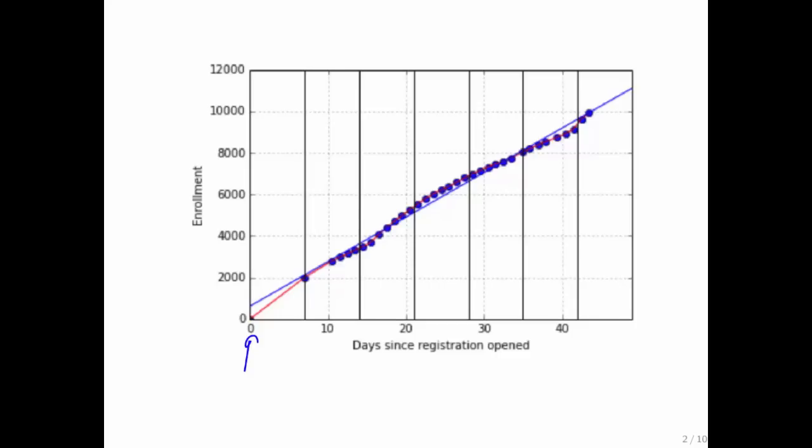So what I did was I started collecting data on how many people had registered as a function of the number of days since registration opened. And here is data for the first 45 days or so of this exercise. And what do we notice? We notice that, roughly speaking, registration was happening at a constant rate, which means that we can approximate this data quite well with a line. And the question then becomes, what is that line?